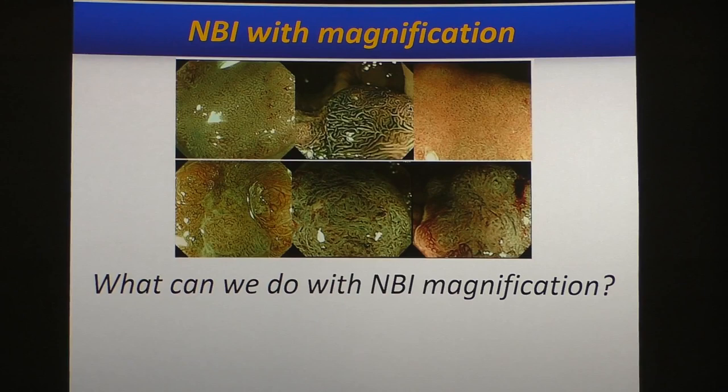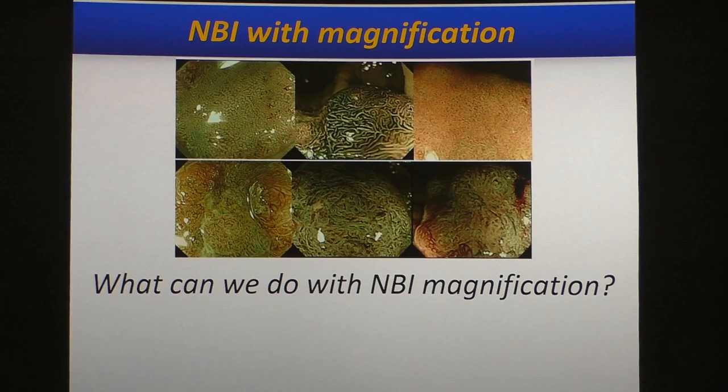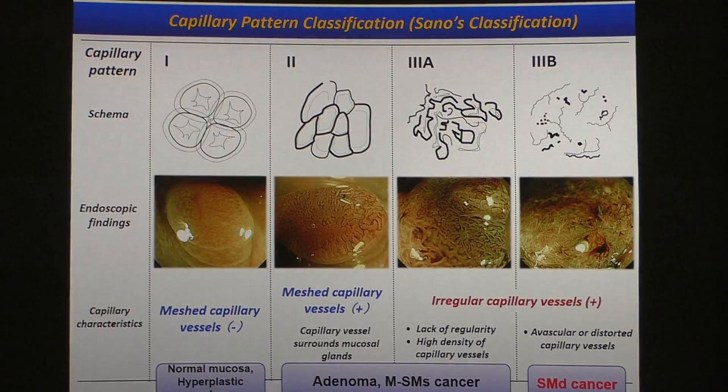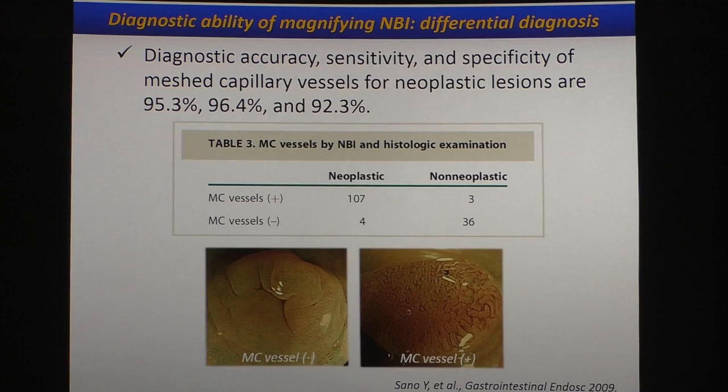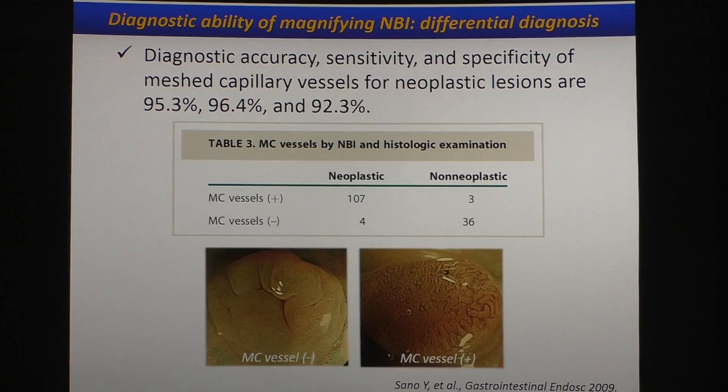What can we do with NBI magnification? We can perform histological diagnosis and depth diagnosis. Previously, we proposed the capillary pattern classification, the so-called Sano classification, focusing on the vascular pattern on colorectal lesions. The diagnostic accuracy of this classification is reportedly high with regard to histological diagnosis and depth diagnosis.